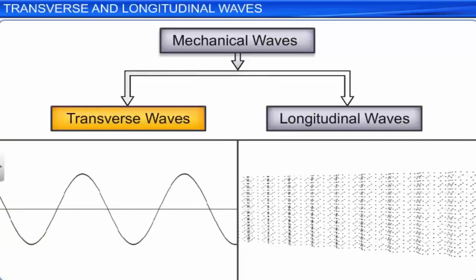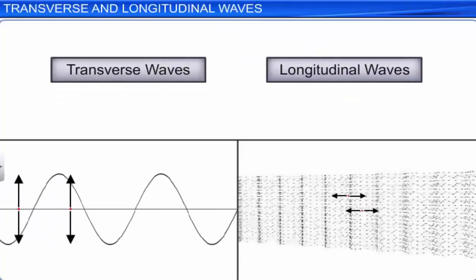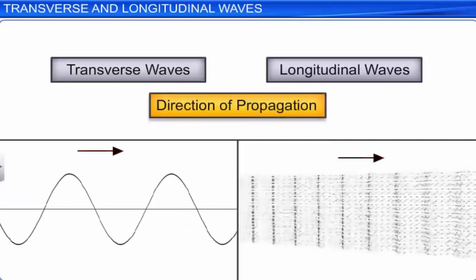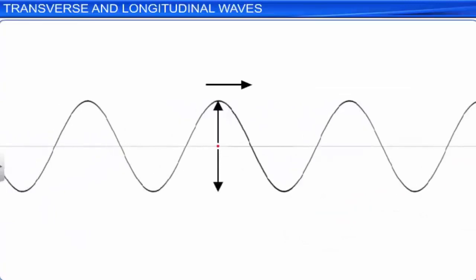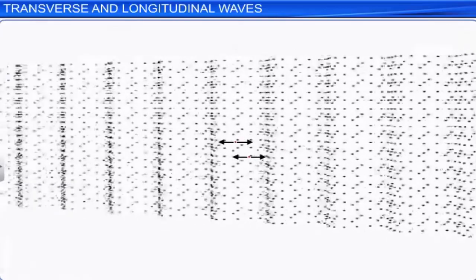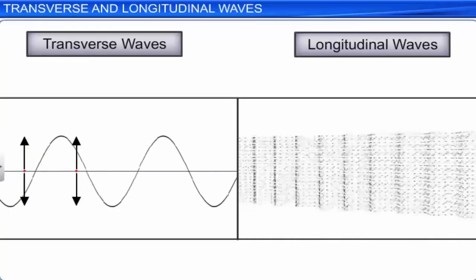Mechanical waves can be either transverse or longitudinal. This depends on the relationship between the direction of displacement of the particles in the medium and the direction of the propagation of the disturbance or the wave. In both waves, it is only the disturbance that propagates and not the particles of the medium. The particles of the medium only vibrate about their mean positions.